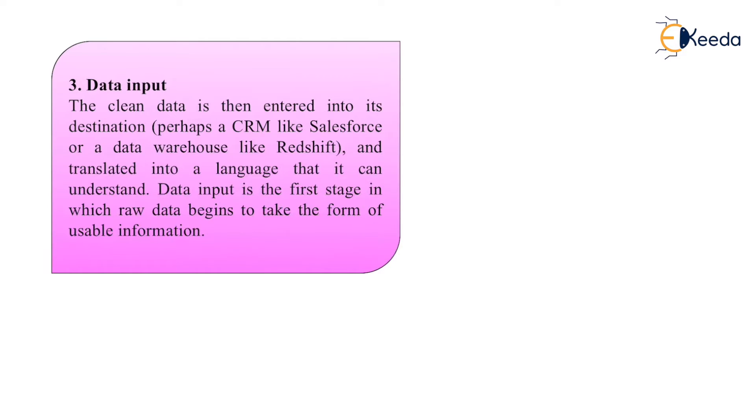Third is data input. The clean data is then entered into its destination and translated into the language that it can understand. Data input is the first stage in which raw data begins to take the form of usable information.